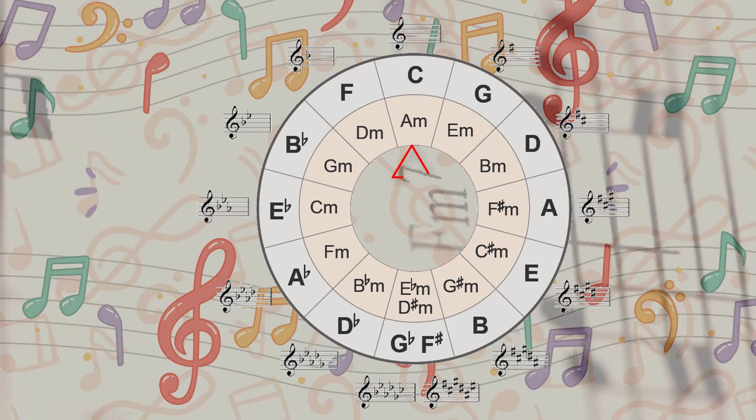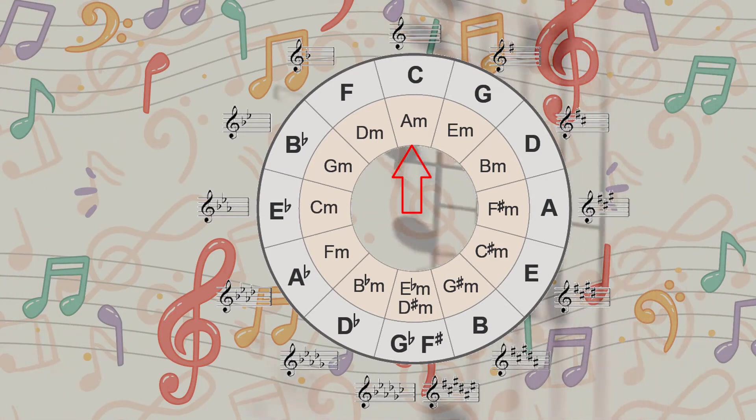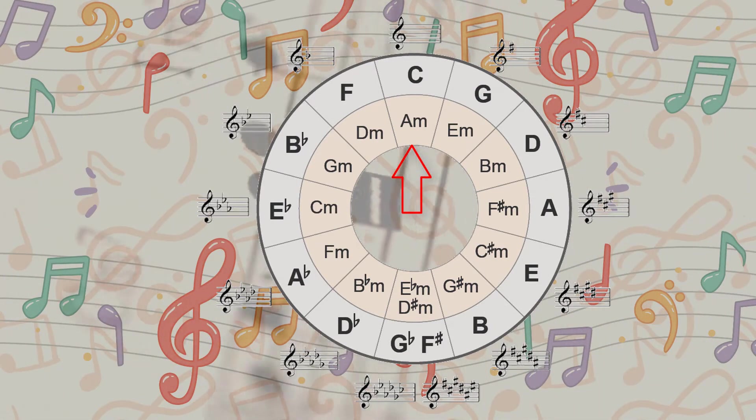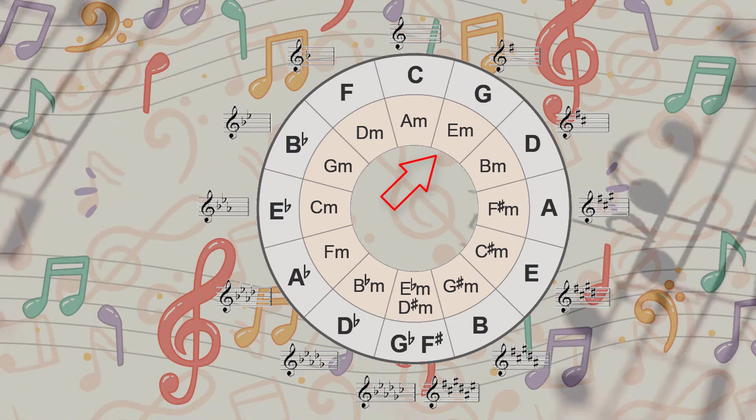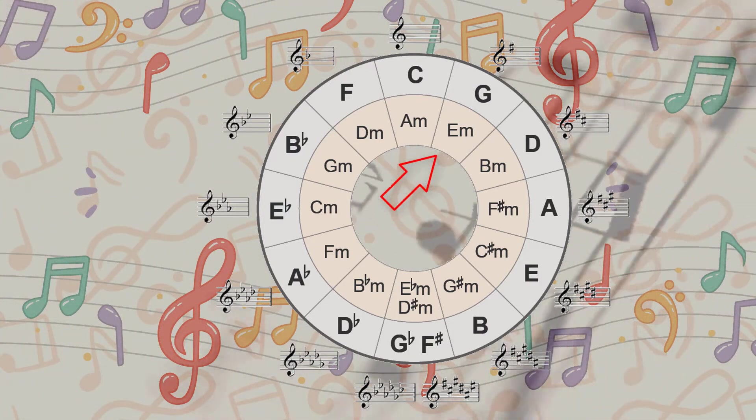Starting at 12 o'clock we have the parallel keys of C major and A minor with no sharps or flats. Moving clockwise to one o'clock we arrive at G major or E minor with one sharp, starting the journey of keys with sharps in them.